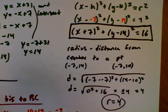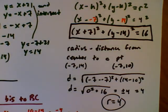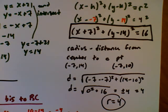So that's how you find the equation of the circle if you have three points: find the center using perpendicular bisectors, find the radius using the distance formula, and then write your final equation.